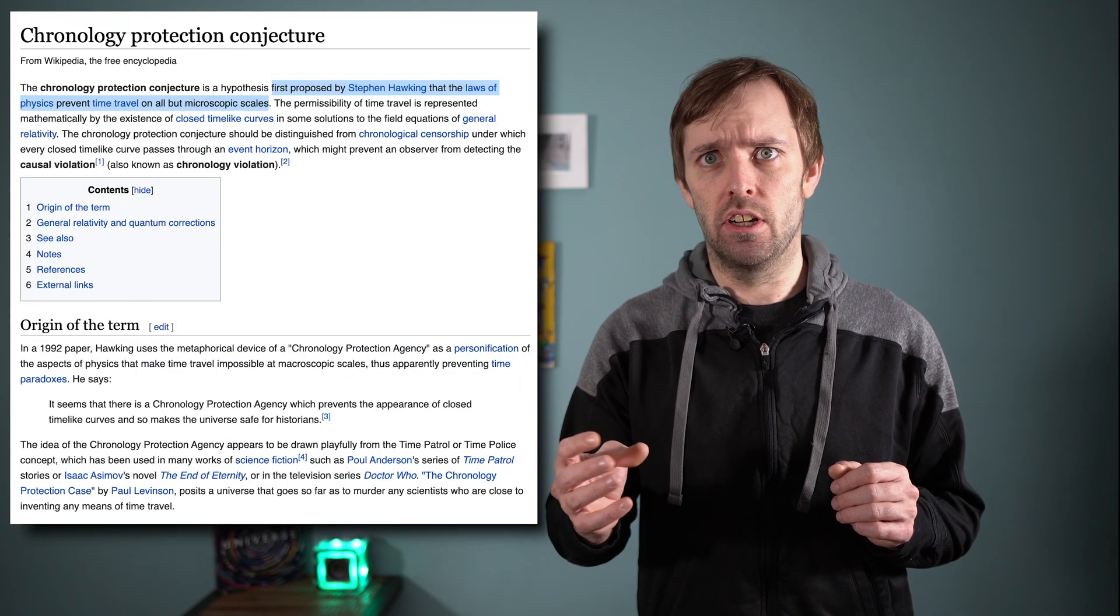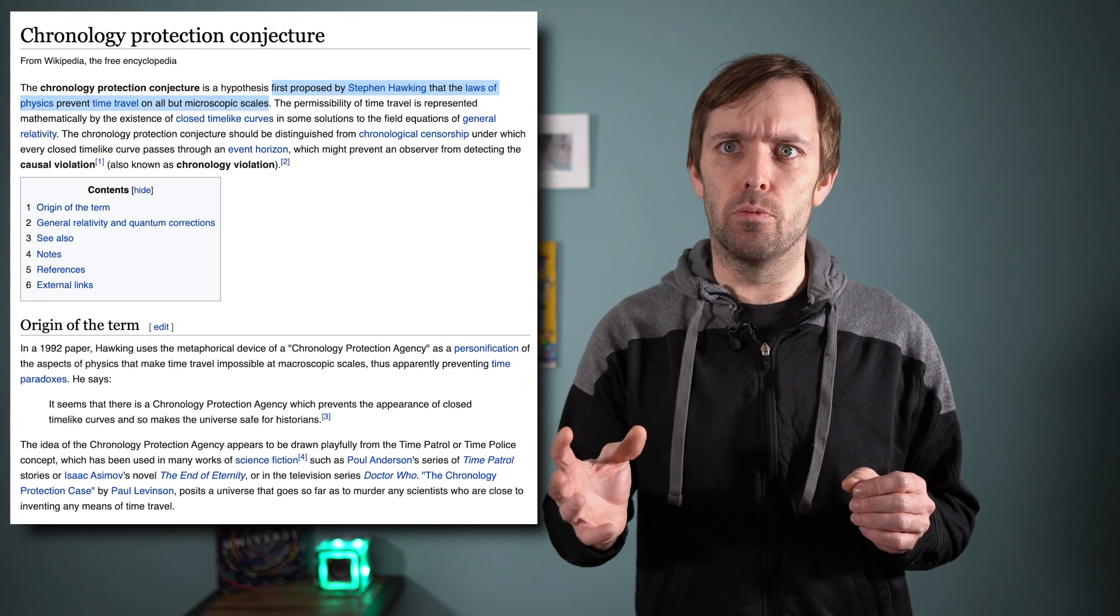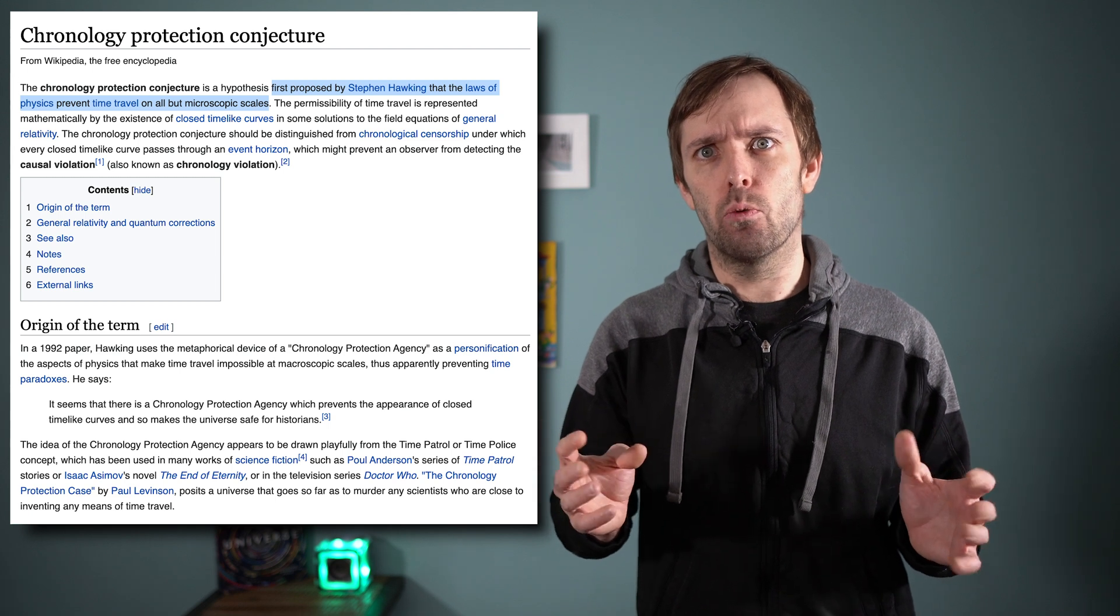Stephen Hawking believed the universe would not allow time travel for anything but the smallest of subatomic particles. In his chronology projection conjecture, he posits that any such loop containing non-trivial energy would pile up and thus obliterate whatever was causing the temporal disturbance. Alice and her Alcubierre Drive in our Exploding Moon Example.